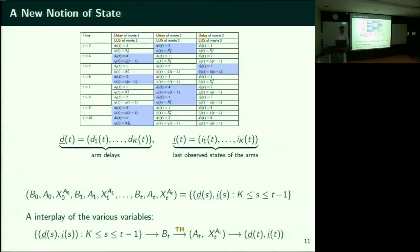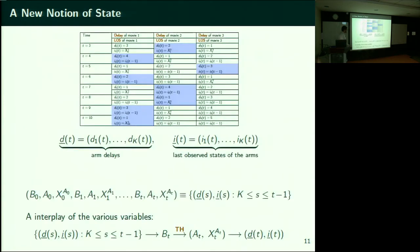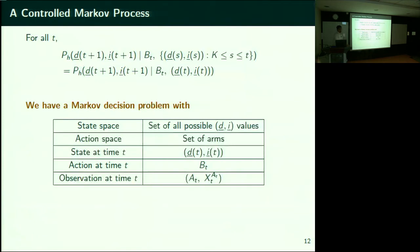The reason I point out this nice relationship is that you can update the last observed states and delays conditioned on what your BT is and what your previous arm delays and last observed states are. In other words, this relationship captures a certain controlled Markov process — a Markov decision problem where you look at the delays and last observed states as your new states. The state space is the set of all possible delays and last observed states; the action space is the set of arms. The state of time T is the pair (DT, IT); your action is which arm you intend to pull.